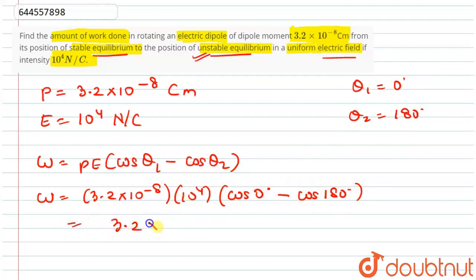So how much is it? 3.2 × 10⁻⁴ times (cos 0° is 1, minus cos 180° is -1), so this will be 2. Multiply by 2, we get 6.4 × 10⁻⁴ Joules. This is the work done and the answer to our question.